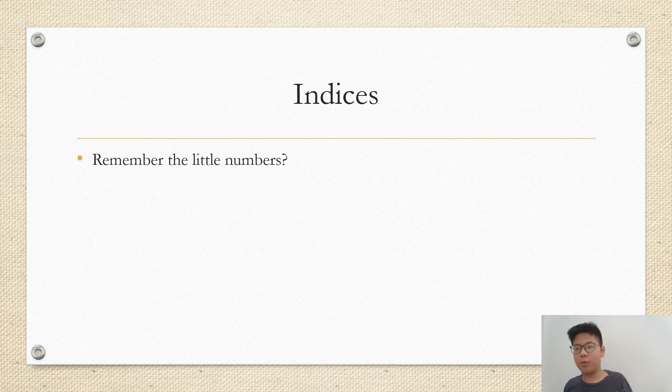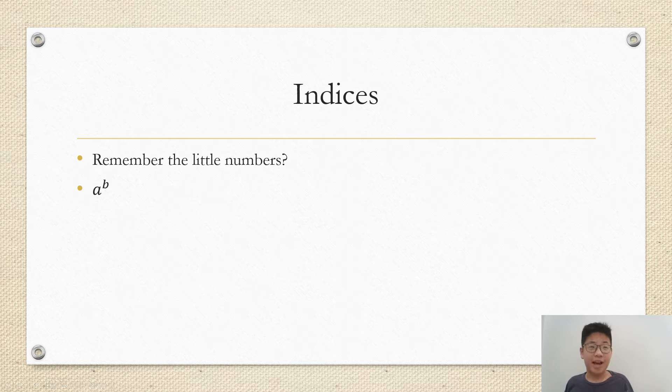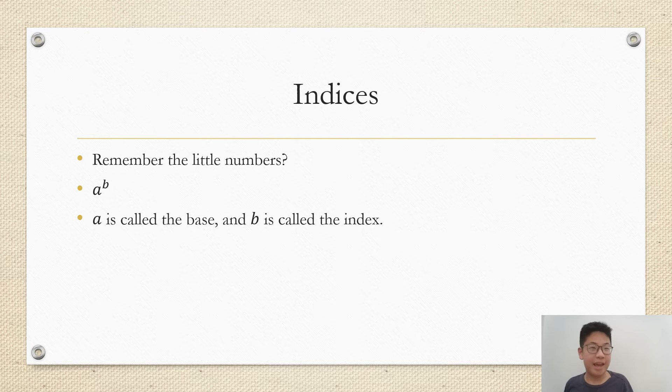Remember those little numbers in prime factorization? Well these are actually called indices, and a to the power of b is a times b a times. So a is called the base and b is called the index.